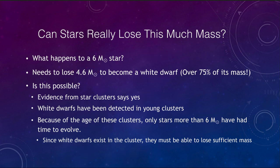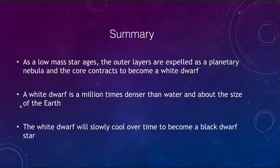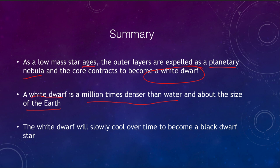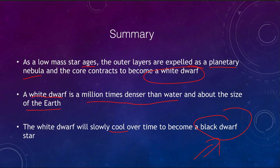To summarize: for a low mass star as it ages, the outer layers are expelled as a planetary nebula and the core contracts to become a white dwarf. The white dwarf is a million times denser than water and is about the size of the Earth, compressed so that the electrons are as close together as they possibly can be. The white dwarf will slowly cool over time to become a black dwarf — the eventual fate of essentially all stars under 10 solar masses. Stars over 10 solar masses have more interesting things happen, which we will look at later. That concludes this lecture on the deaths of low mass stars.